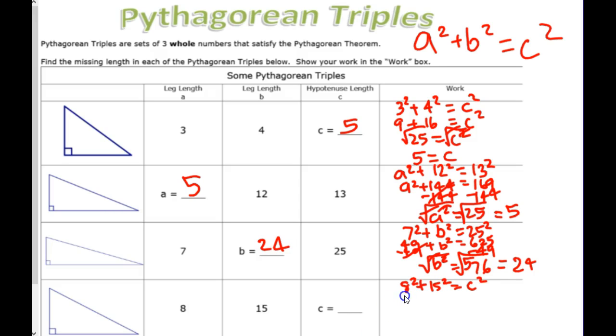8 squared plus 15 squared equals C. What's 8 squared? 64 plus what? 15 squared?